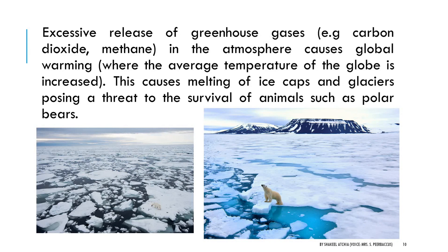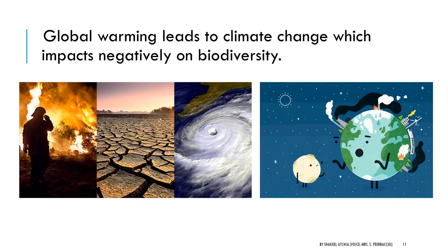What are the consequences or effects of air pollution? The excessive release of greenhouse gases, that is carbon dioxide and methane in the atmosphere, causes global warming, where the temperature of the Earth is increased. This results in the melting of ice caps and glaciers, posing a threat to the survival of animals such as polar bears. Global warming also leads to climate change, which impacts negatively on biodiversity.